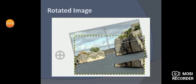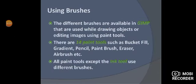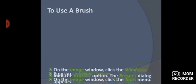Next, using brushes. In GIMP there are different varieties of brushes that help you draw objects, edit images, and use paint tools. There are a total of 14 paint tools — some of them are bucket fill, gradient, pencil, paintbrush, eraser, airbrush, etc. All paint tools except the ink tool use different brushes.